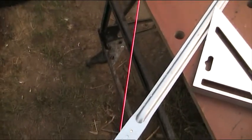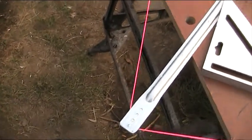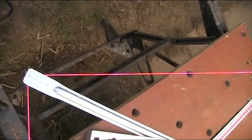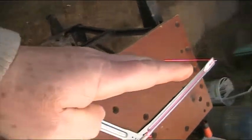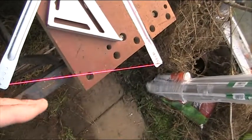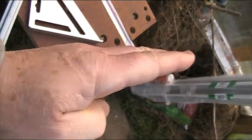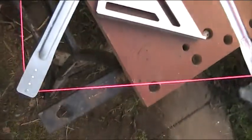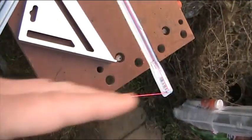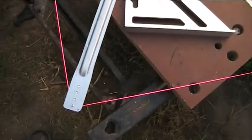these bits of string that I've added to demonstrate the point wouldn't be anything that you would use in the field. This line here you would sight through into the field, and similarly this line here you would sight into the field, and therefore you know that the two sight lines are at 90 degrees to each other.